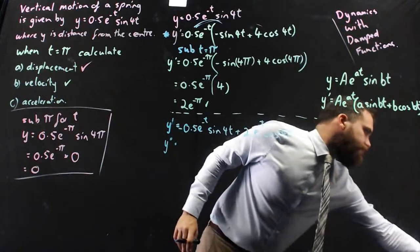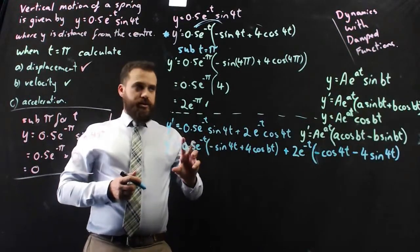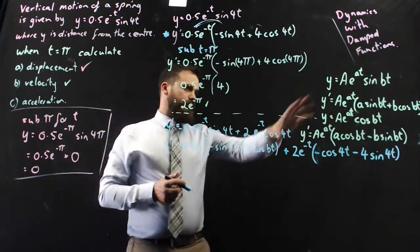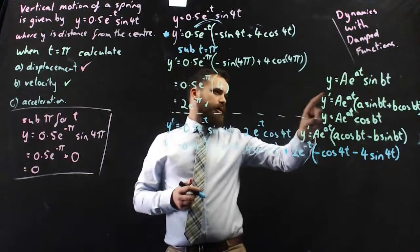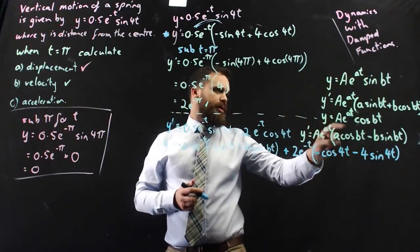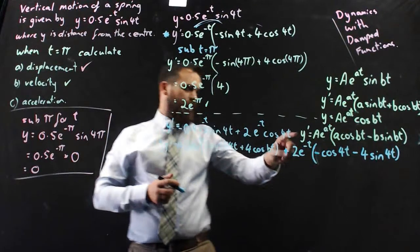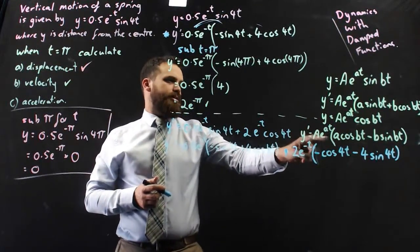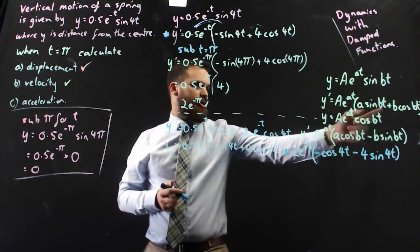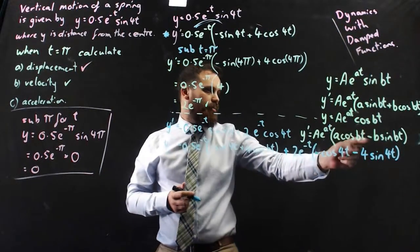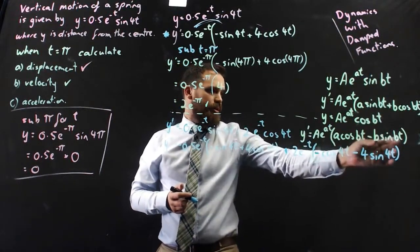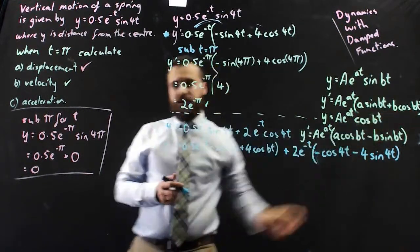Alright, let's do it. So there's the ugliness in all its glory. You can take a look here. Here's our y equals Ae to the at cos bt. Y dash is Ae to the at times a cos bt minus b sine bt, so the reverse of that. Probably not a great idea to memorize them.